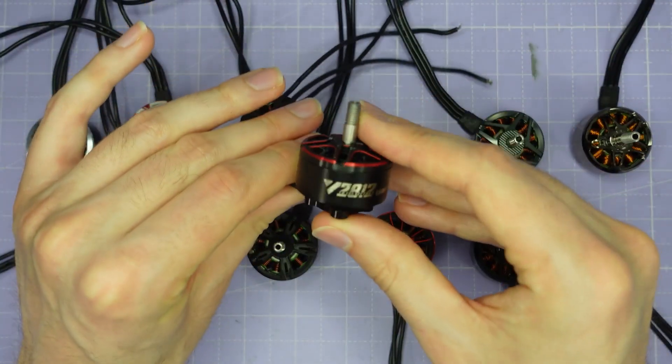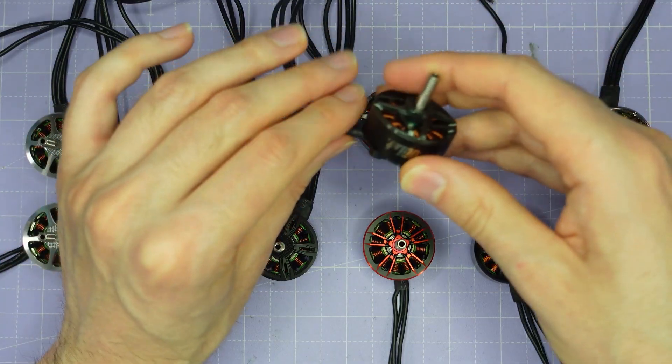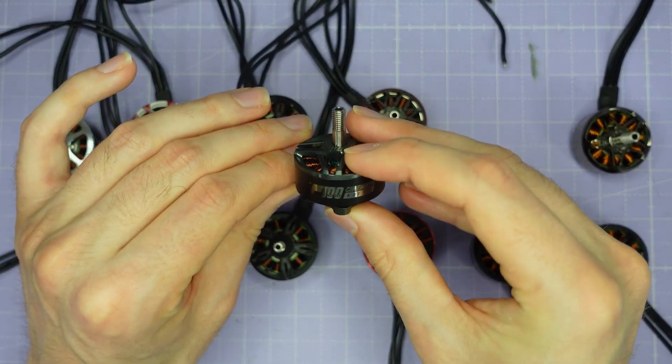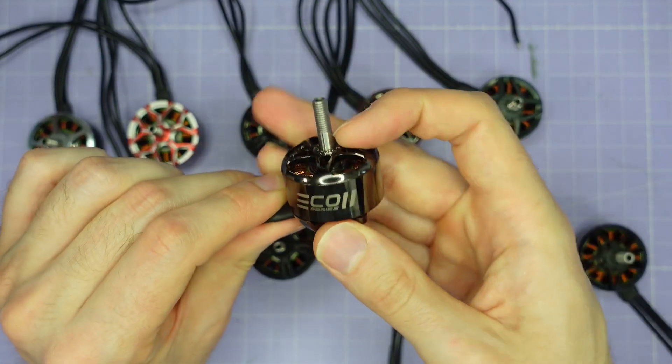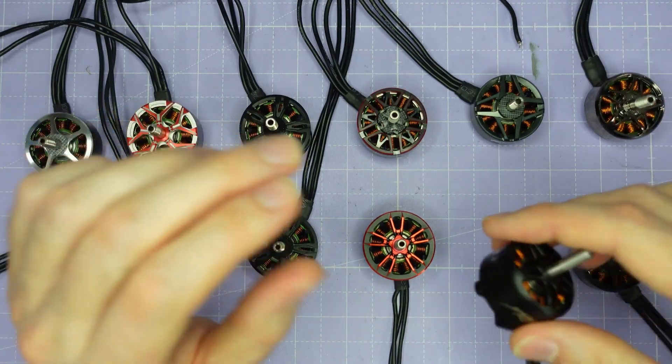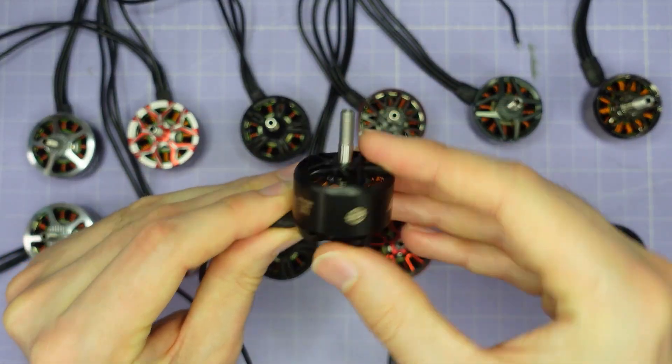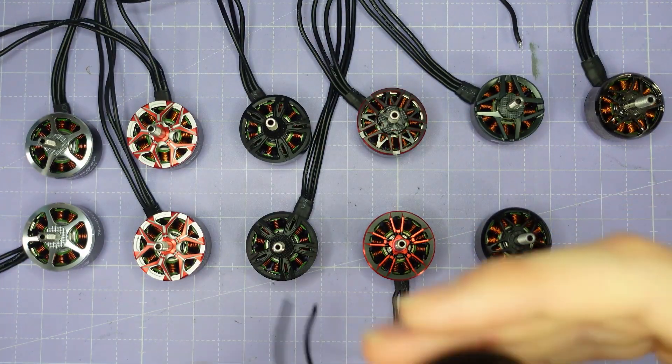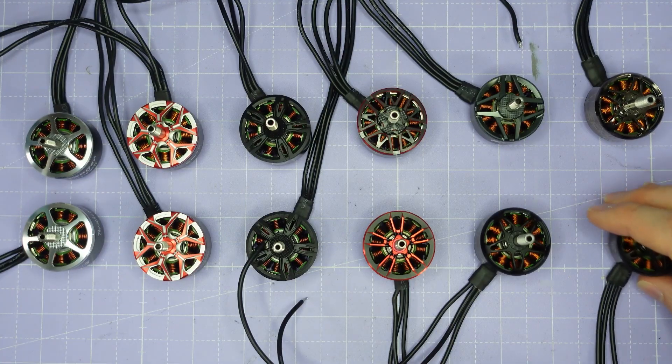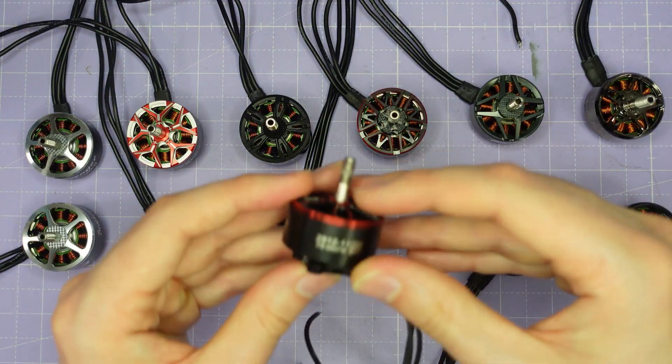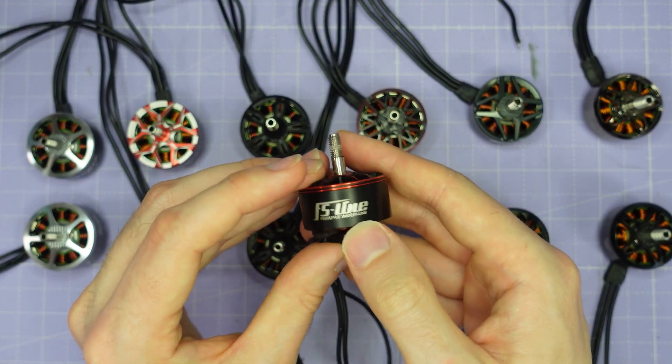From T-Motor we have the Velox 2812 1155 kV and the F1000 1100 kV which is a 2810 in size. From Emax we have the Emax Eco2 2812 in 1100 kV, and we also have the Pro in 2810 size at 1180 kV. Finally we have from Xnova the Xnova 2812 1100 kV and that's from their FS line, which is the Freestyle Smooth.